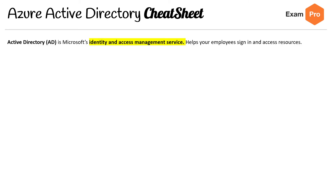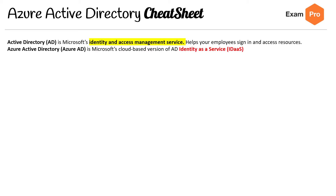Active Directory, just Active Directory alone, which is AD, is Microsoft's identity and access management service that helps your employees sign in and access resources. Then you have Azure AD, which is the same thing except it's the cloud-based version. One term you'll hear a lot with this is Identity as a Service, which means it's like the serverless or hosted version — so you don't have to think about or manage servers.